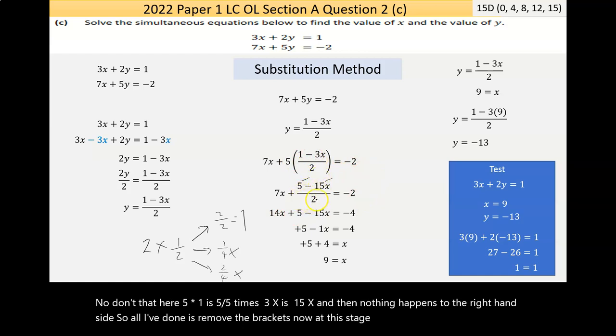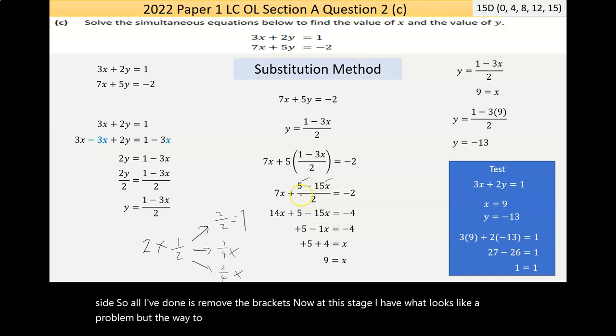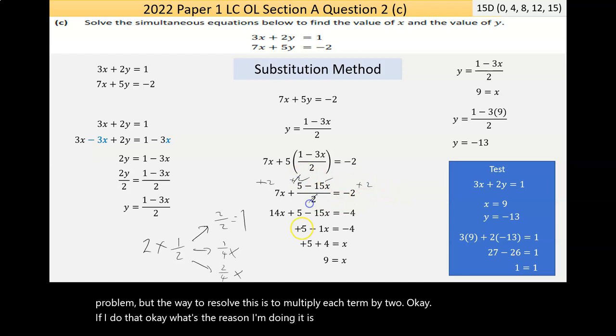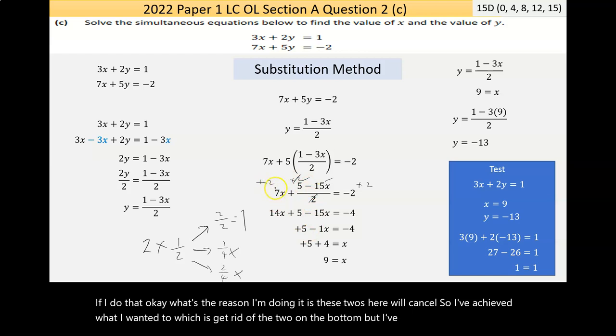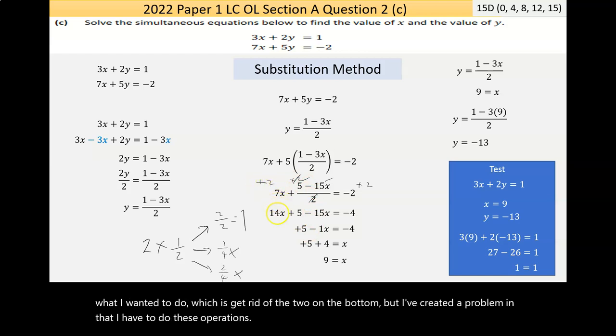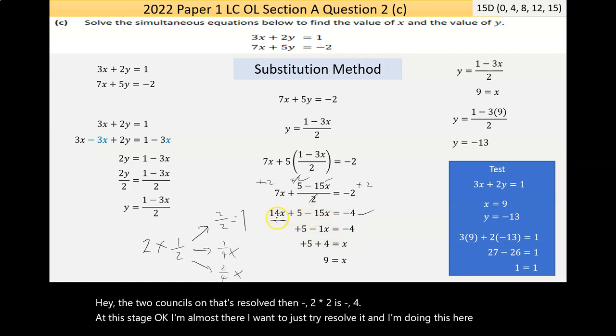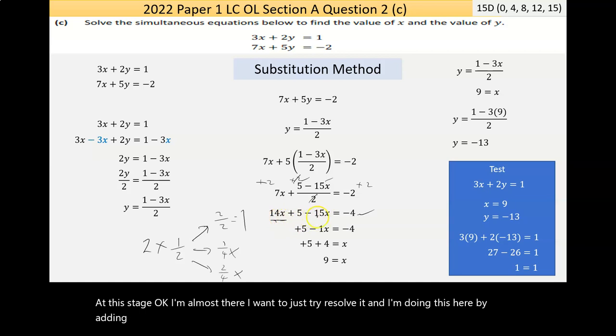Now, I've done that here. 5 times 1 is 5. 5 times negative 3x is negative 15x. And then nothing happens to the right-hand side. So all I've done is remove the brackets. Now, at this stage, I have what looks like a problem. But the way to resolve this is to multiply each term by 2. If I do that, the reason I'm doing it is these 2s here will cancel. So I've achieved what I wanted to, which is get rid of the 2 on the bottom. But I've created a problem in that I have to do these operations. 2 times 7x is 14x. The 2s cancel, so now that's resolved. Then negative 2 times 2 is negative 4. Now, at this stage, I'm almost there. I want to just try to resolve it. And I'm doing this here by adding the x's. So 14x take away 15x is negative 1x. And that's all I've done here. All the other things stay the same.